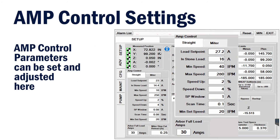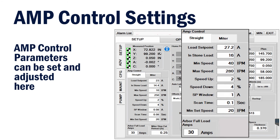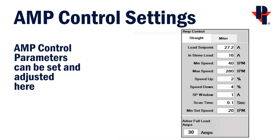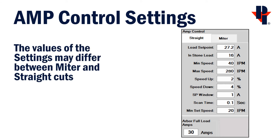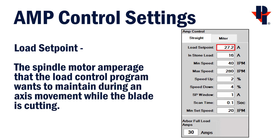Here, you can change or adjust any of the Amp control settings. The setting types are the same between the miter and non-miter cuts, though they may have different values. The Load Setpoint is similar to setting the speed on the cruise control on your car. Some of the other parameters reference the Load Setpoint.